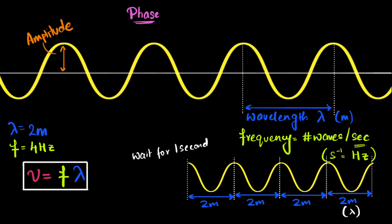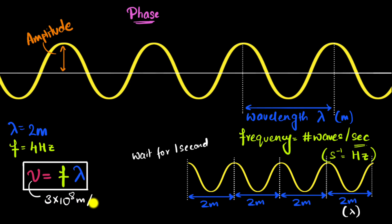For electromagnetic waves in vacuum, the velocity is just a constant. Any electromagnetic wave in vacuum will always travel at approximately 3 × 10⁸ meters per second. We often call this c — the speed of light in vacuum. It is independent of the frequency of the wave and independent of the wavelength of the wave.